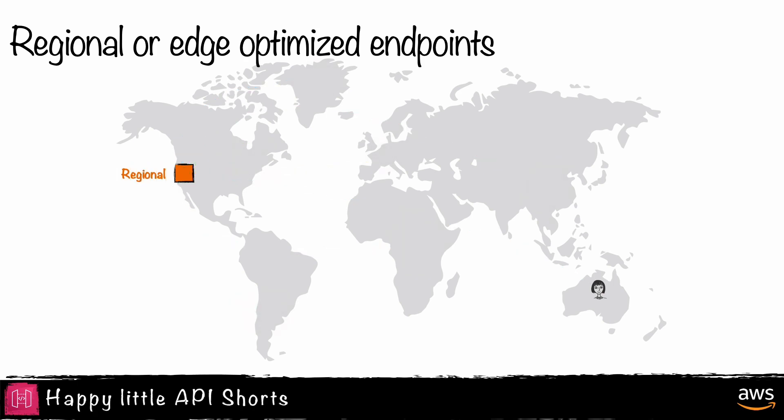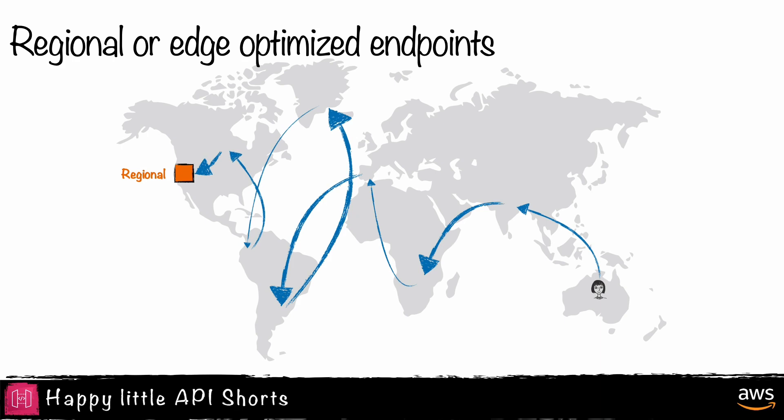For regional endpoints, the request is routed across the public internet to the regional destination. For example, I have a regional endpoint deployed in the US West 2 region. A client request from Alice Springs in the Northern Territory of Australia would need to traverse the public internet, fighting throttling, congestion, and bounces to reach my API.